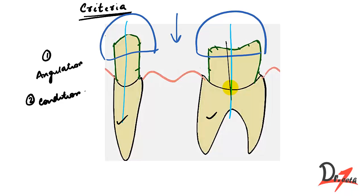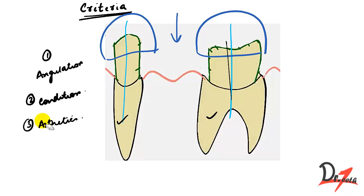The third criteria is aesthetics. Aesthetics is very important so we will consider this as well. Then the fourth one is preservation of the tooth structure.